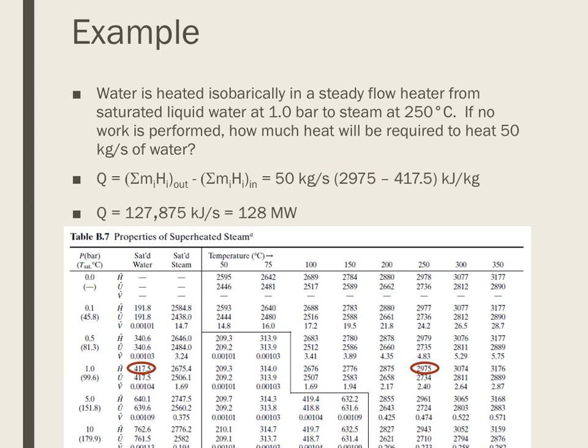So now I just need to plug these numbers in. Then my units, kilograms cancel. I'm left with kilojoules per second. If I wish, then this would be equivalent to 127,875 kilowatts. But it's more convenient to go ahead and use my SI prefixes. And therefore the answer is 128 megawatts. Thank you.